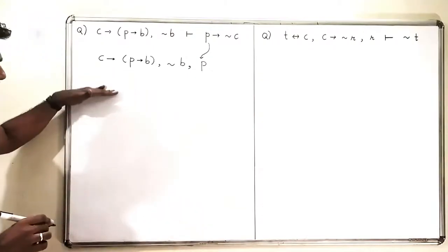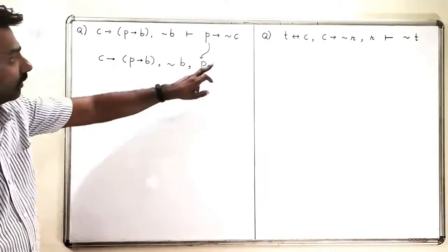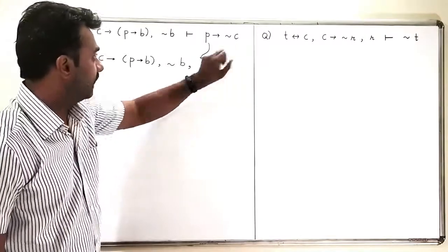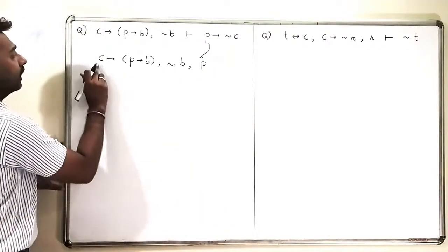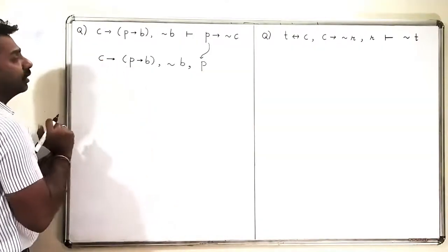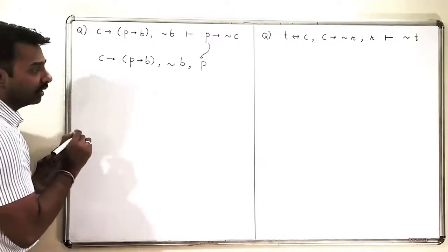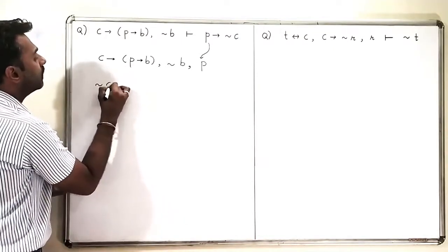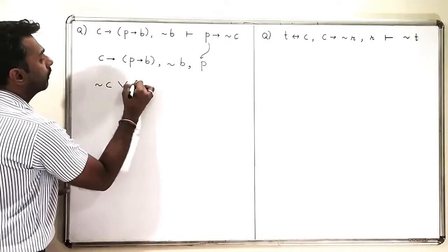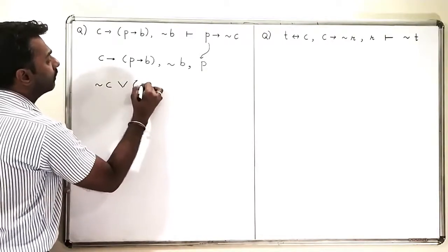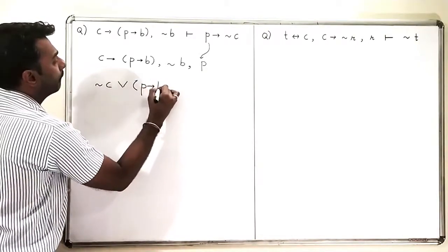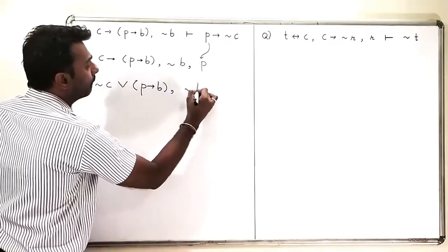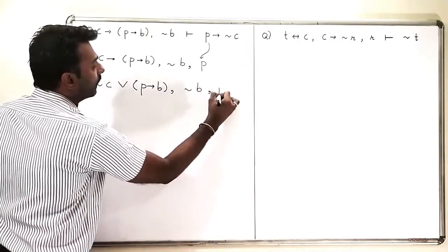Now I will try to simplify this and check whether it comes out to be negation C. When I convert the first implication into a disjunction, it becomes: negation C or (P implies B), then negation B, and P.